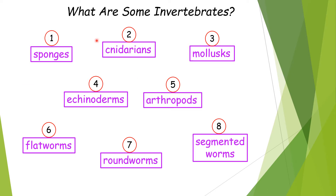Let's learn about different kinds of invertebrates: sponges, cnidarians, mollusks, echinoderms, arthropods, flatworms, roundworms, and segmented worms.